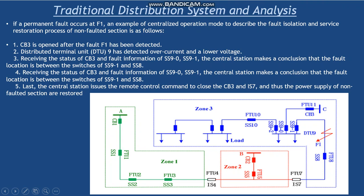First of all, circuit breaker 3 will be opened as soon as the fault will be detected. When the fault has been detected, the distribution feeder terminal unit FTU9 will detect that there is an overcurrent and low voltage current. This information will be sent to the central station and it will conclude that the faulted section is in between switching segment 9-1 and switching segment 8. It will send a remote control command to close circuit breaker 3 and the switching interconnection switch driver 7, and the power supply of non-faulted section will be restored.